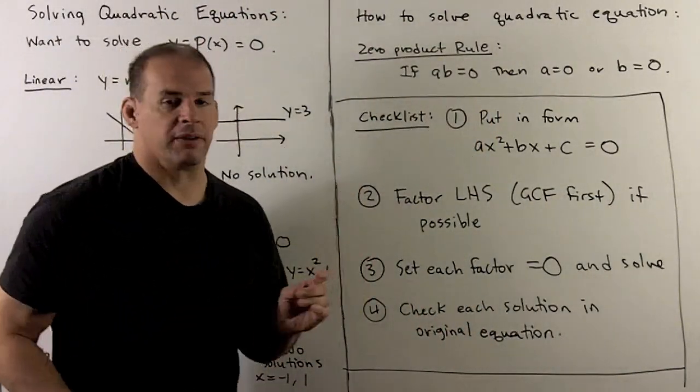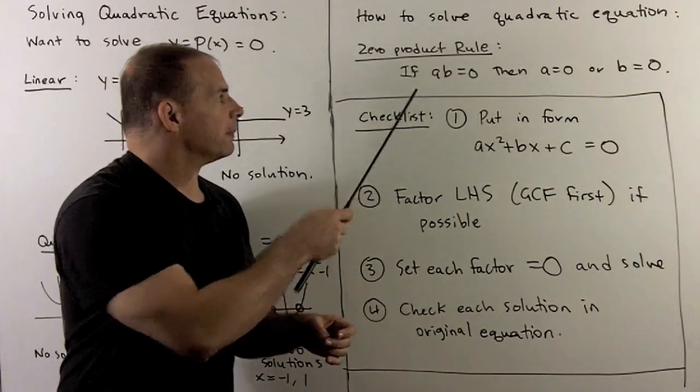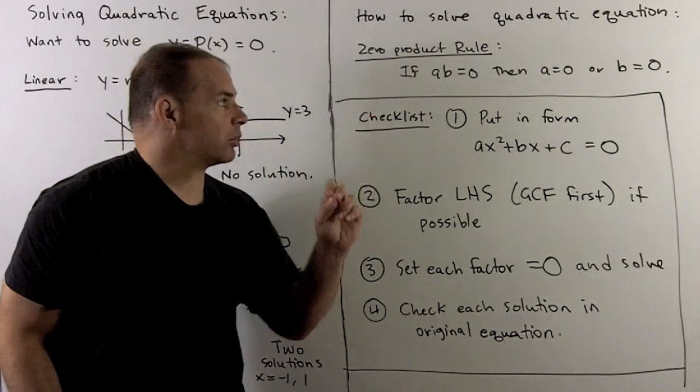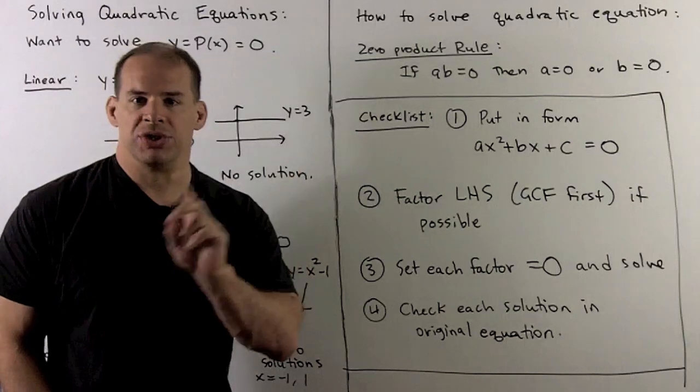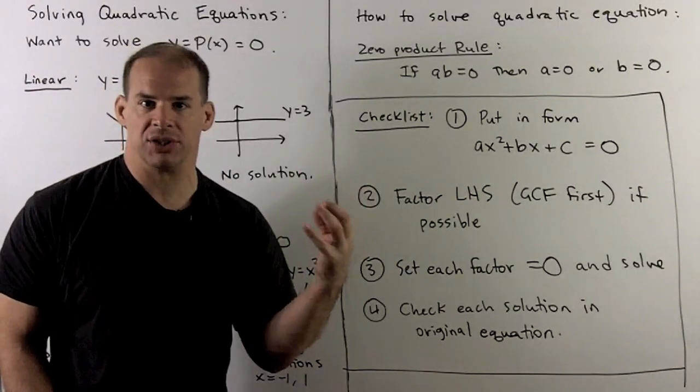Now, what motivates everything is the zero product rule. So the idea is, if I take two numbers, multiply them together, and I get zero. So if a times b is equal to zero, only way that can happen is if one of those numbers was zero to start out with. If you take two non-zero numbers, multiply them together, you get something that's non-zero.